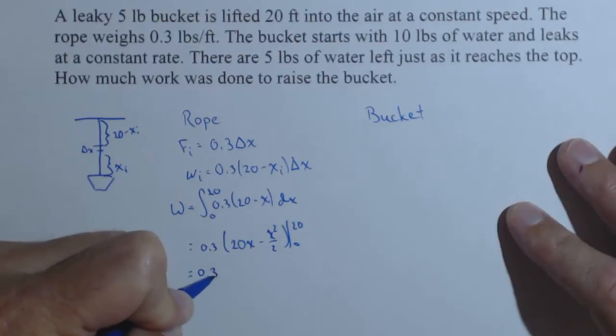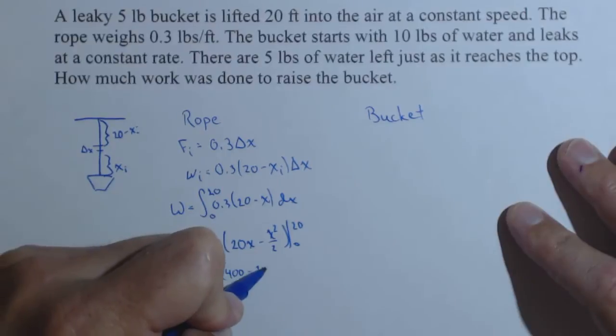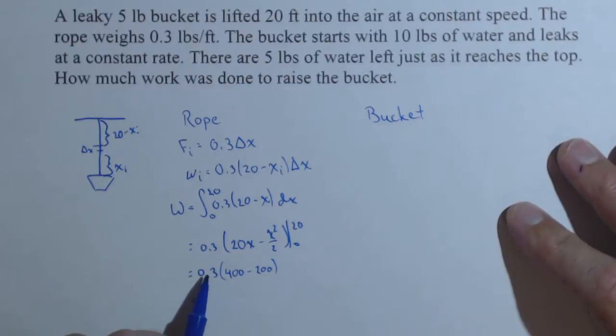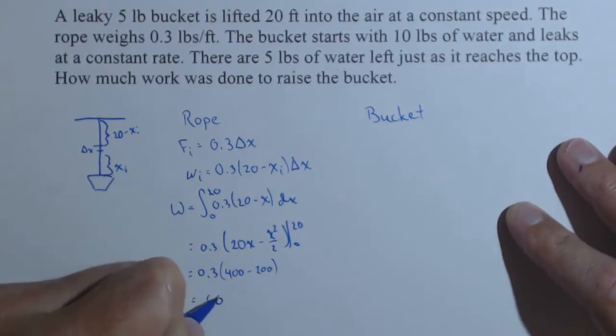So, 0.3 times 400 minus 200. So 0.3 times 200, so that's 3 tenths times 200, so we get 60 foot pounds.